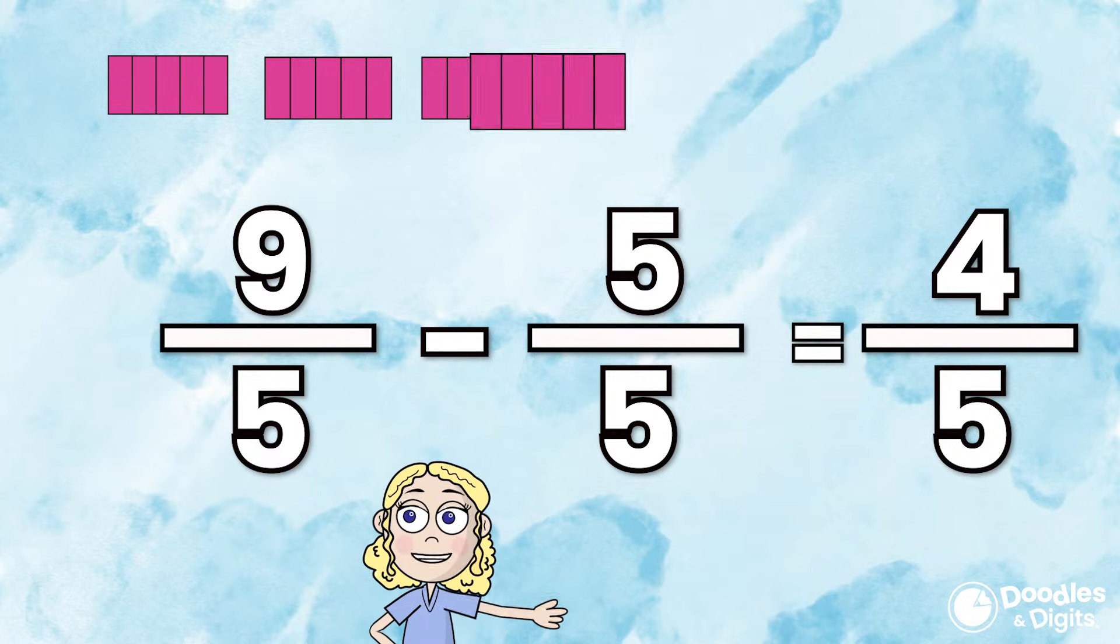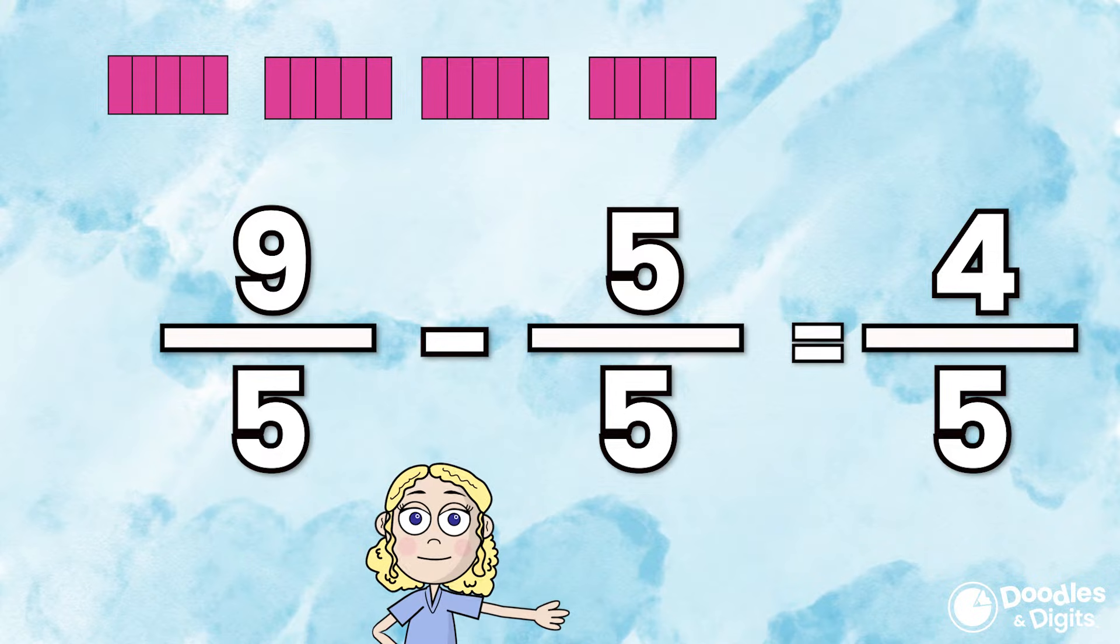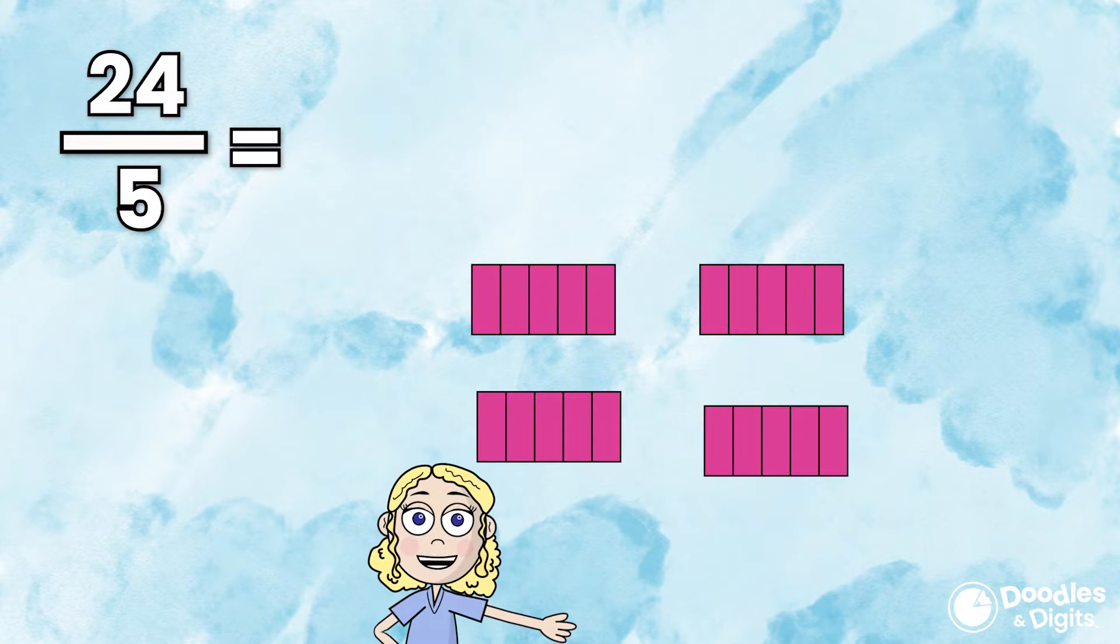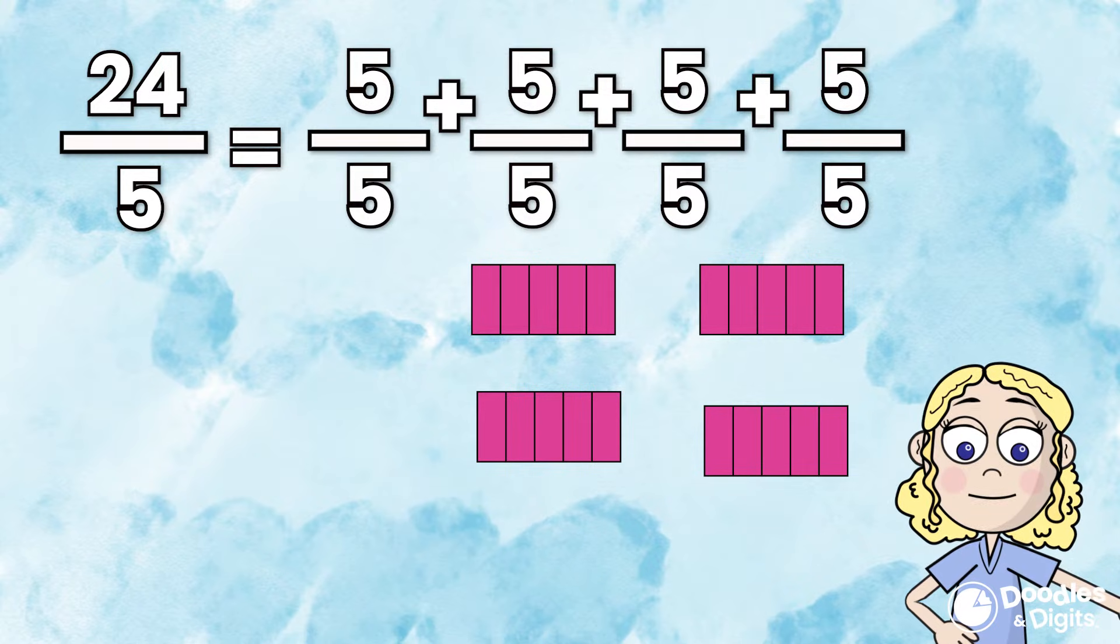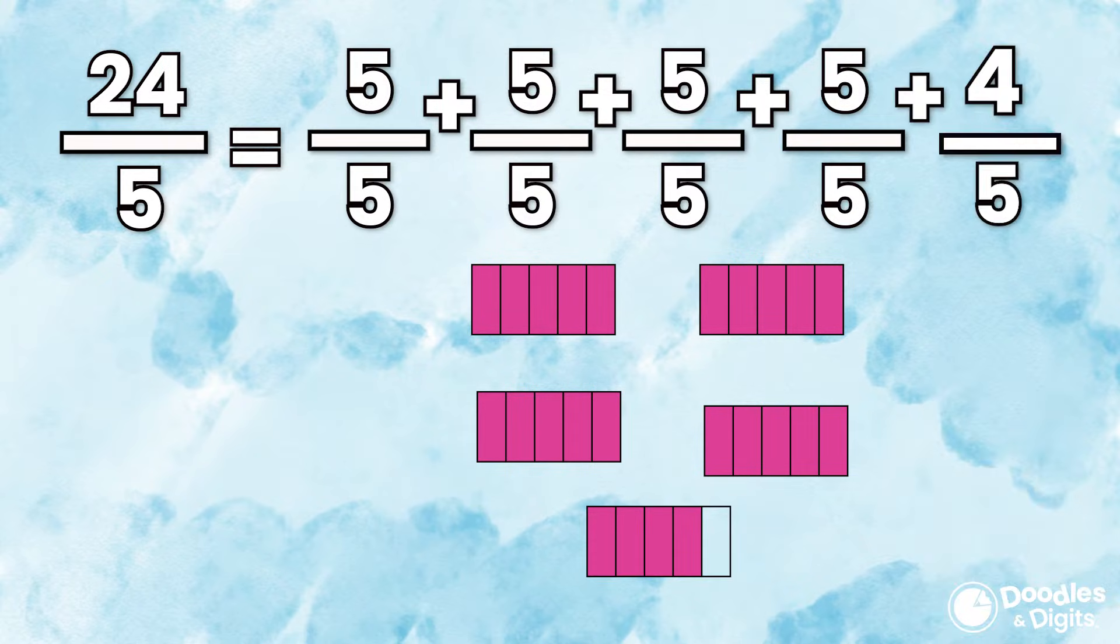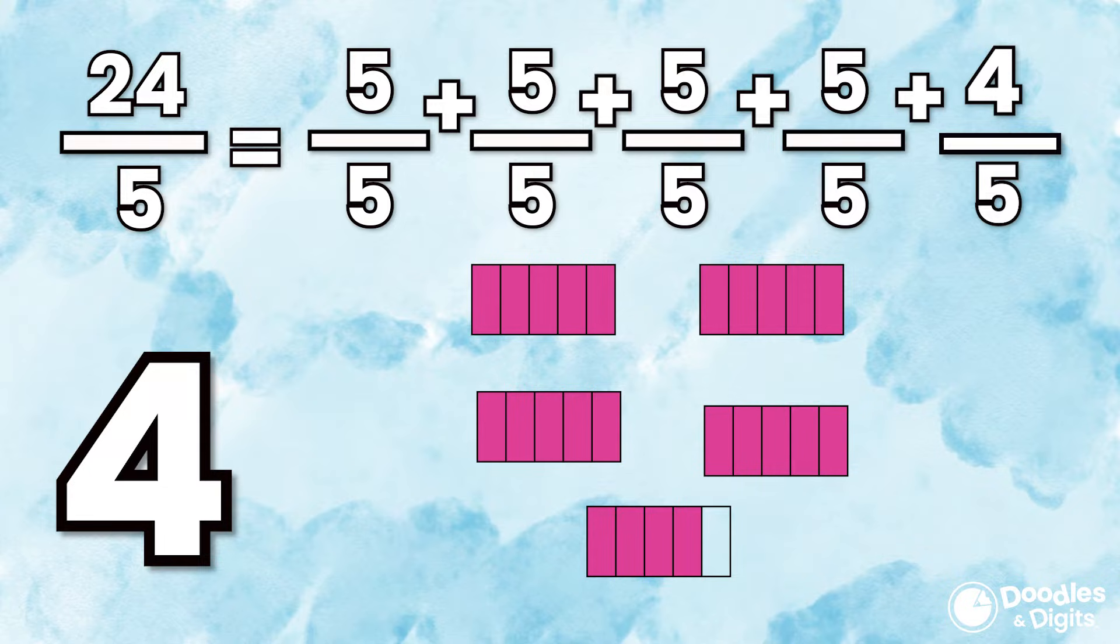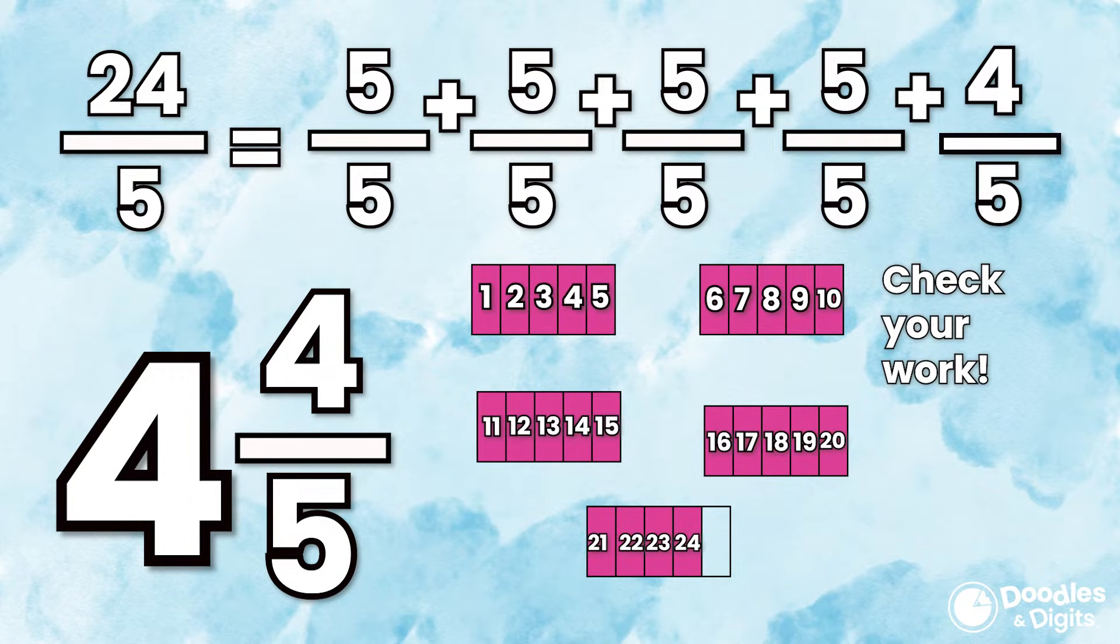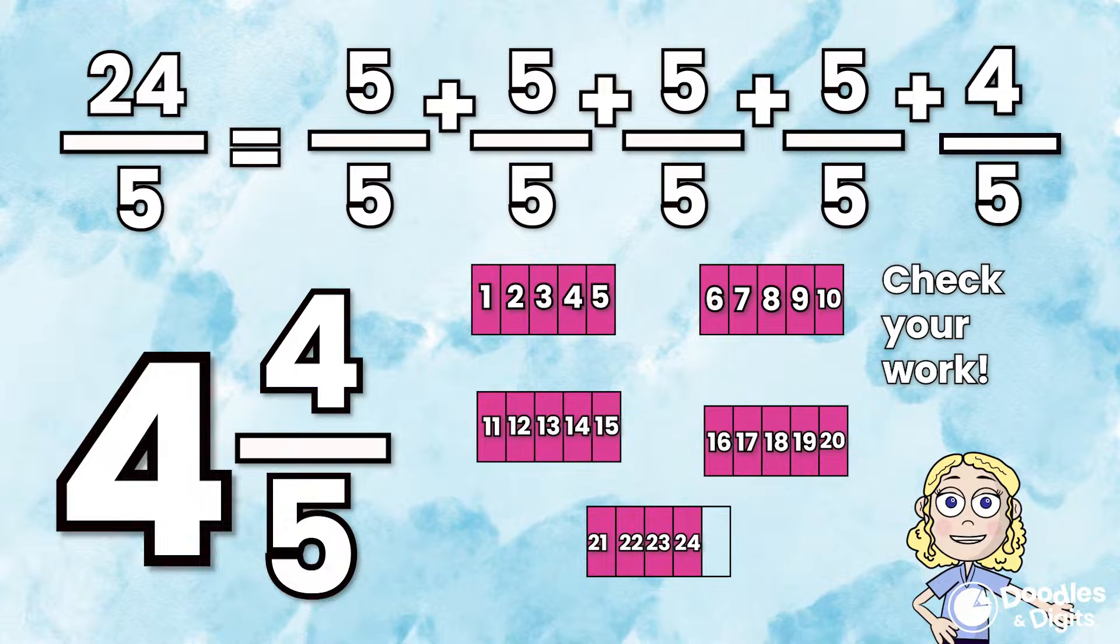So if we have 24 fifths, it's actually the same as four wholes that we could take out and four fifths left over. We can actually check our work by going through and counting the fractions to make sure that four and four fifths is the same as 24 fifths. Is there another way that we can maybe go about solving this besides subtracting five fifths each time?